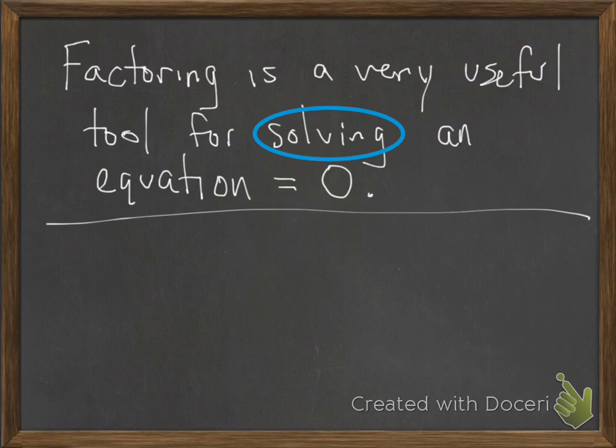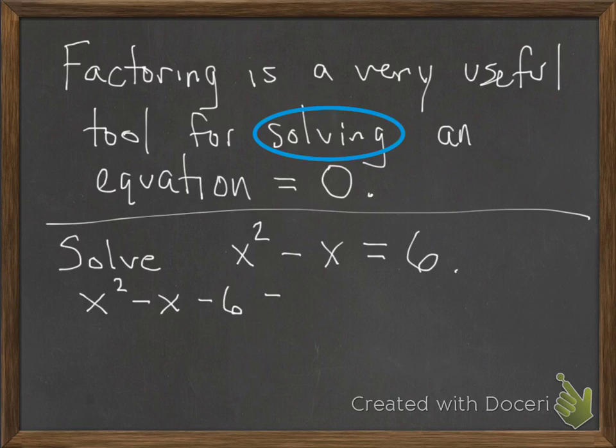The next thing we've got is factoring. Factoring is an insanely useful tool when we're looking to solve an equation equal to 0. So for the process that I'm going to show you, you need the equation to be equal to 0. If you have something like x squared minus x equals 6, and you're trying to solve this for x, you've got to move that 6 over to make it equal to 0.